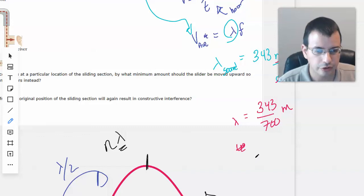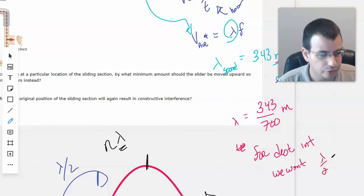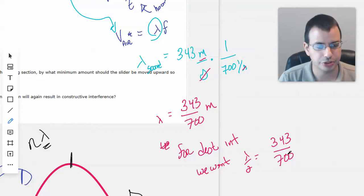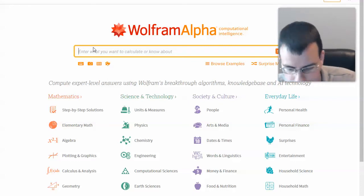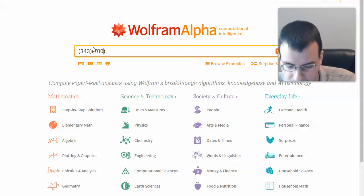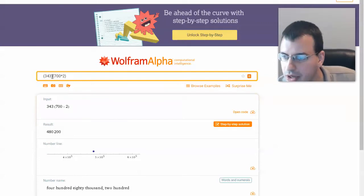So now we want a wavelength over 2. So for destructive interference, we want lambda over 2, which will equal 343 over 700. So we want to extend how far this wave goes by one half wavelength. So 343 over 700, and then we'll multiply by one half to kind of capture this 2 over here. So then we go to Wolfram. We do, let's do some parentheses here. We'll do a 343 divided by 700, and then I'll multiply by 2 on the bottom.